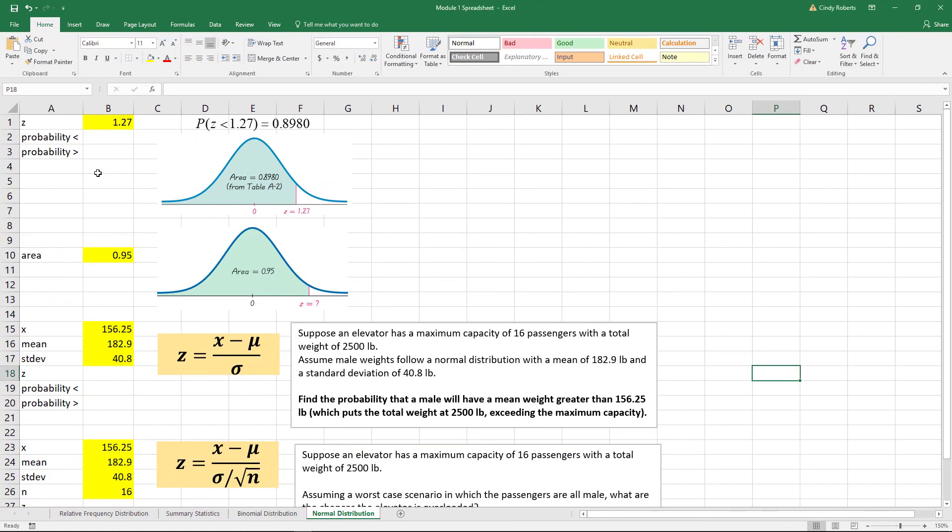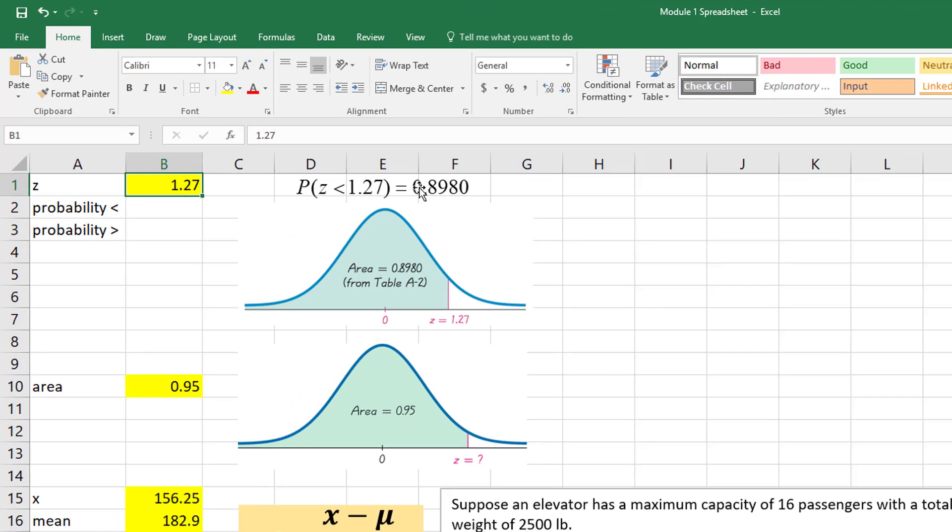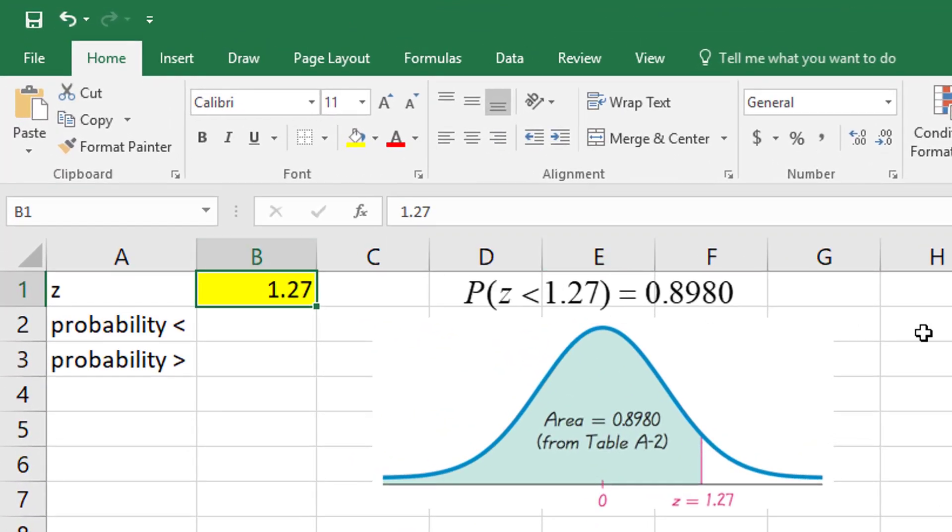Alright, these are examples from the live session of looking up values using a table. In this case, I looked in a Z table and found the Z of 1.27 is 0.8980. Surprisingly, I actually prefer looking up in a table than Excel because I always seem to forget the formulas in Excel.